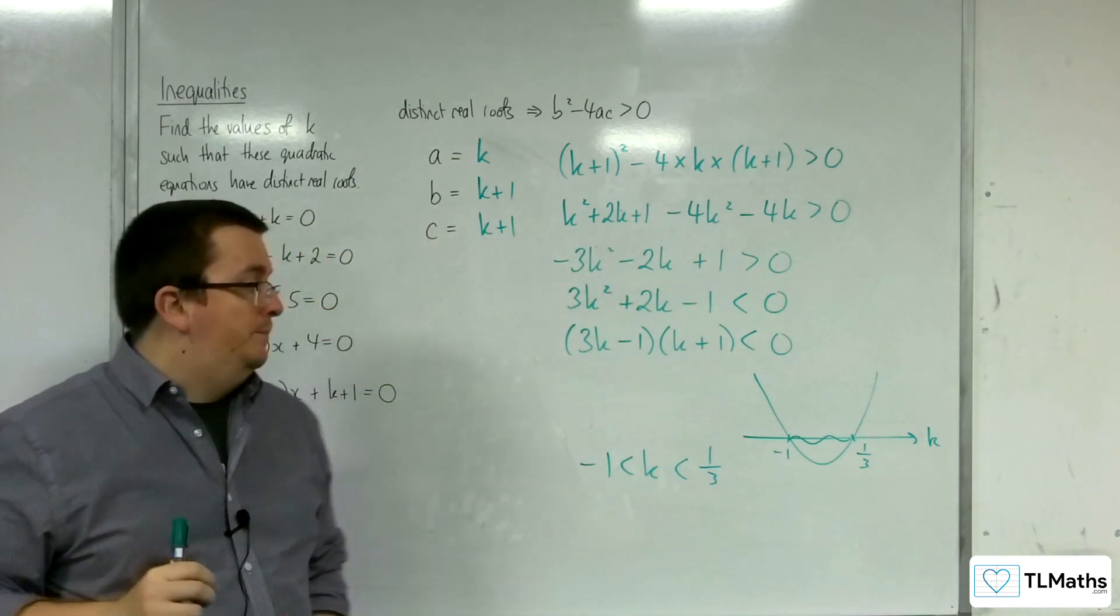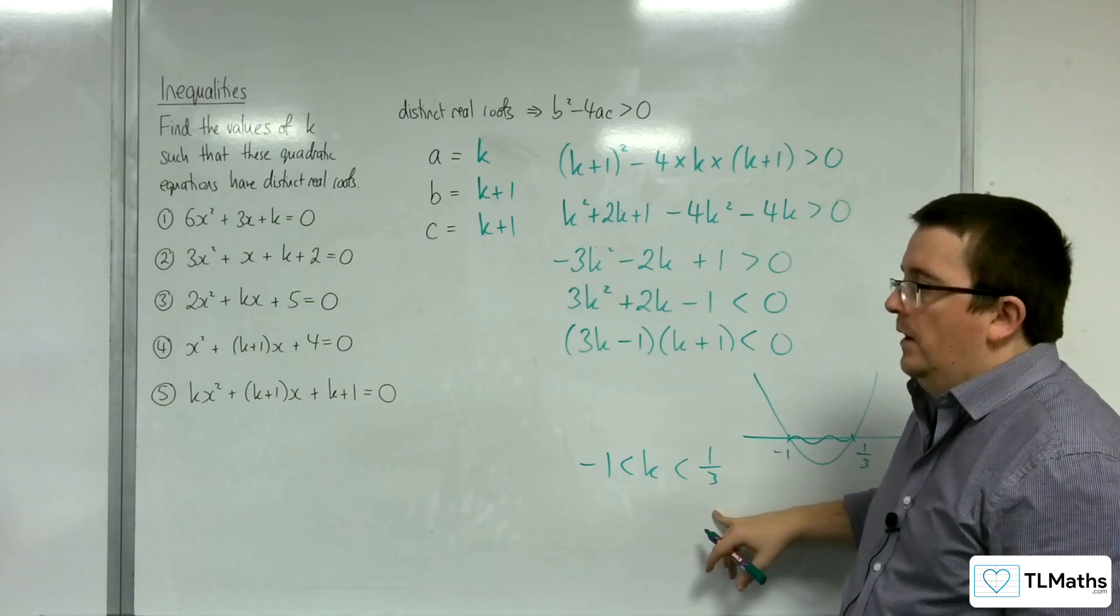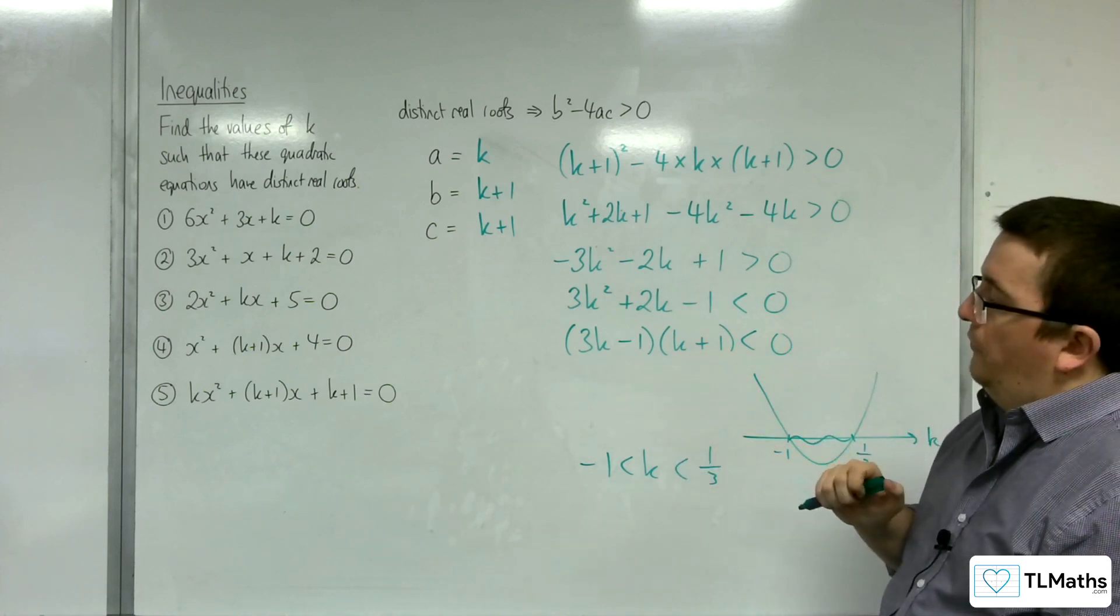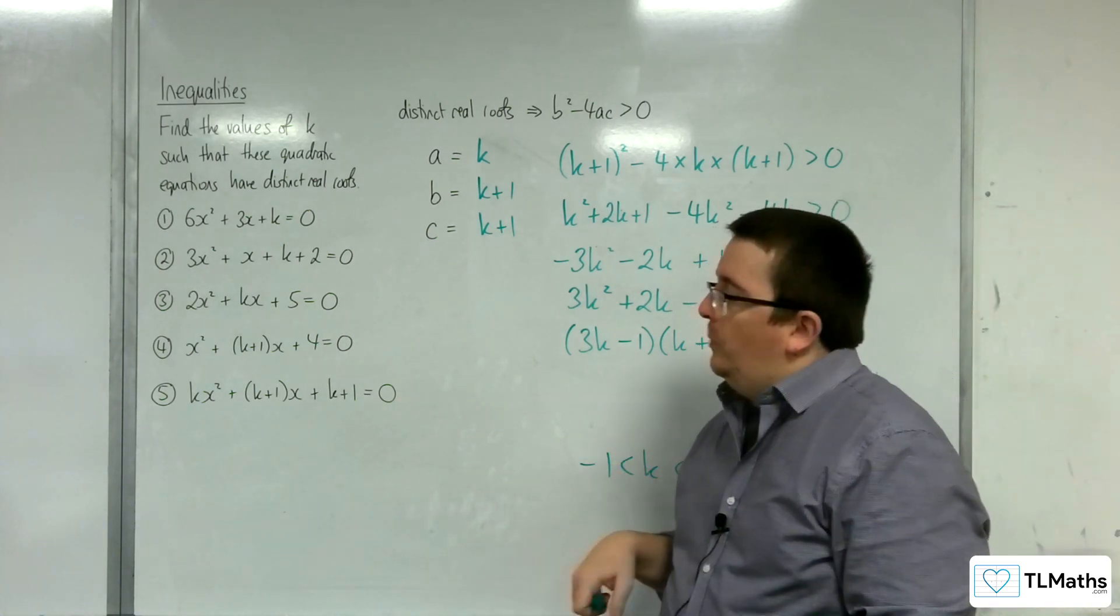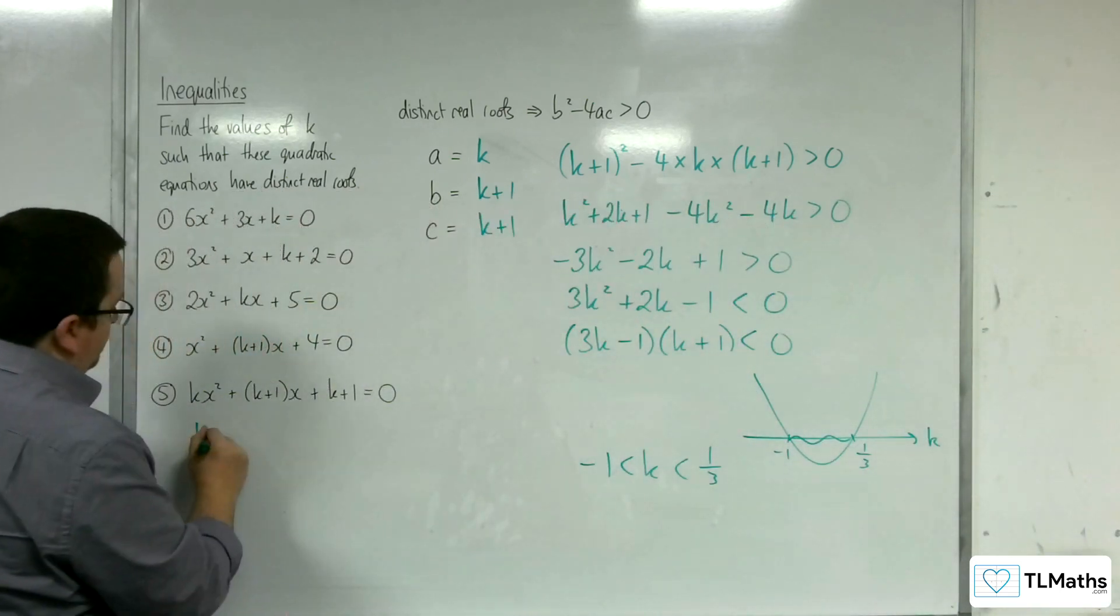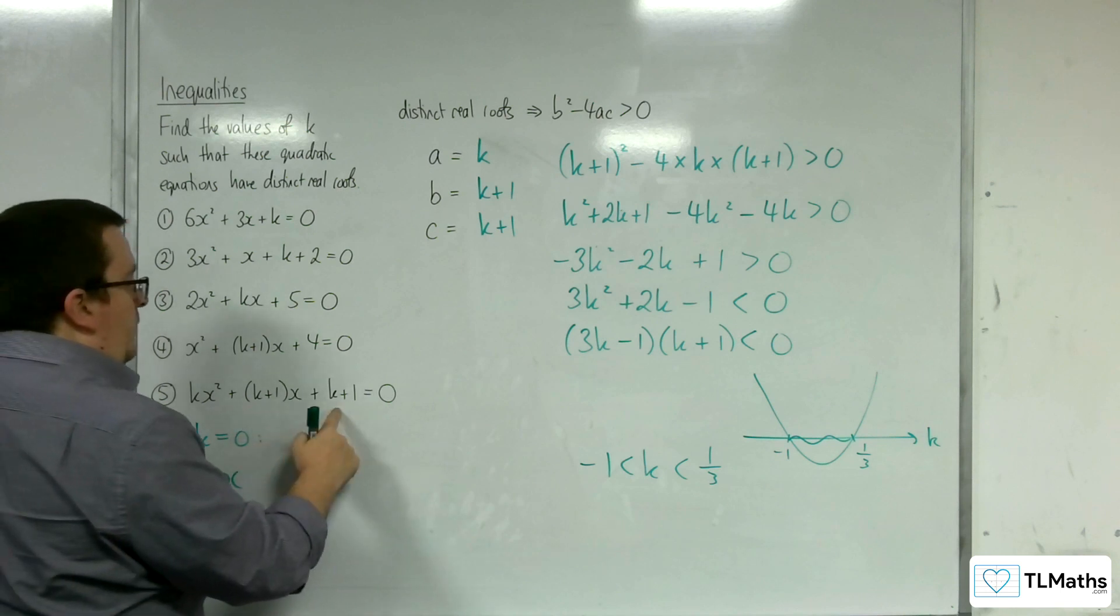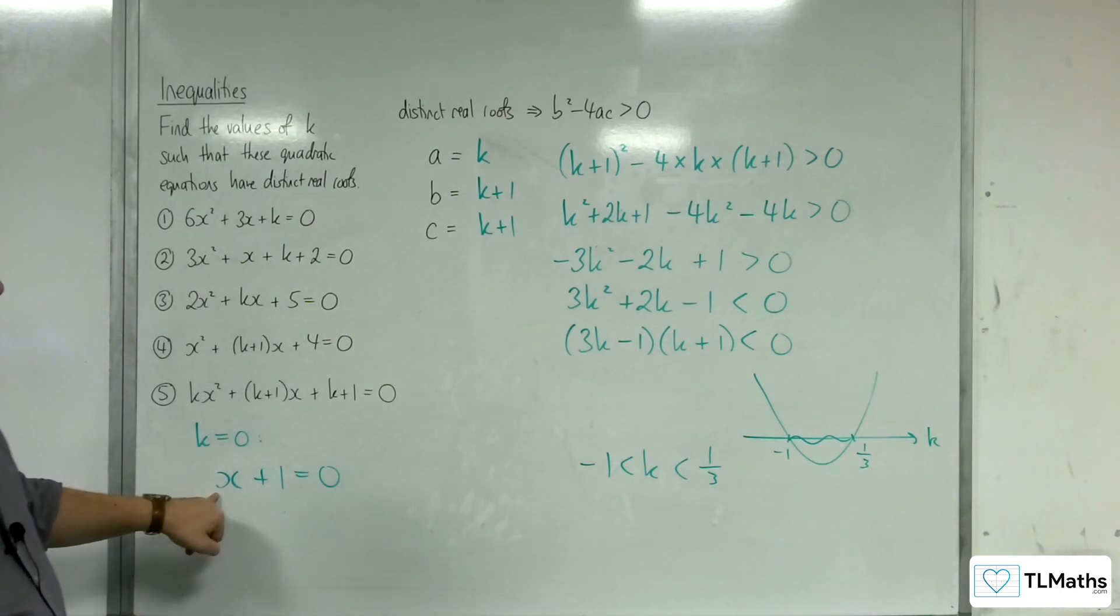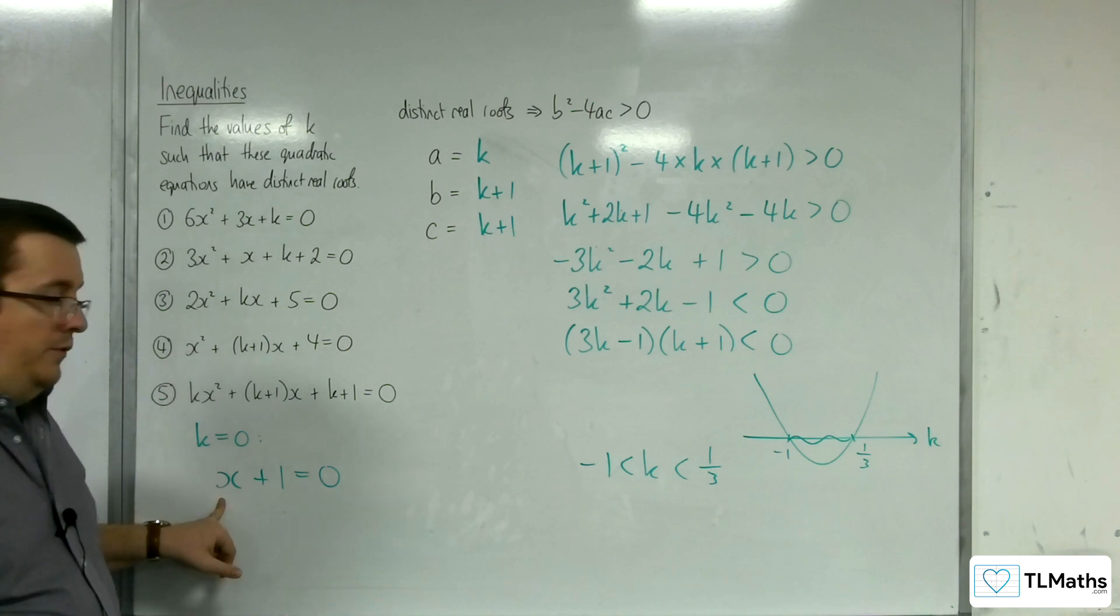We need to be very careful with this one. There is a certain value of k between those two values that is a problem to do with our original question. And that is k equals 0. We're dealing with number 5. What happens when k equals 0? Well, when k is 0, we would have 0x squared. We would have 1 lot of x. And we've got plus 1 is equal to 0. This is not a quadratic equation. It doesn't have more than one real root.